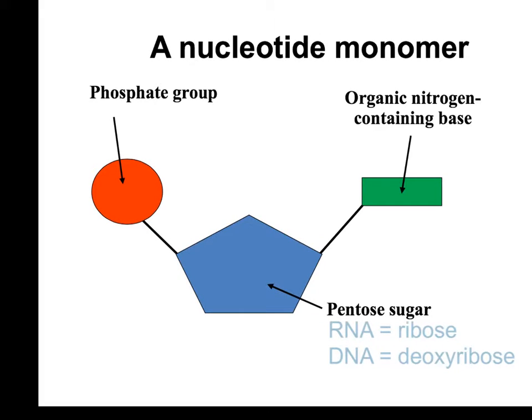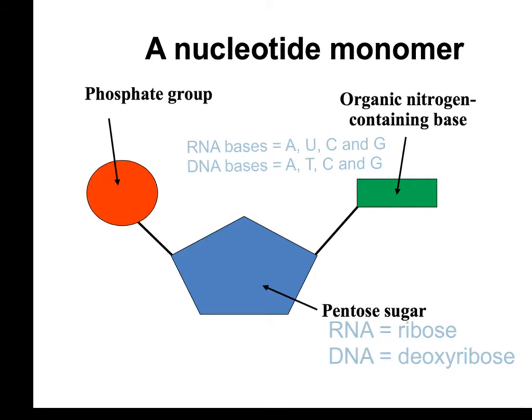The organic nitrogen-containing base is attached to carbon 1. In RNA the bases can be adenine, uracil, cytosine, and guanine. But in DNA, uracil is not present — instead there is the base thymine.